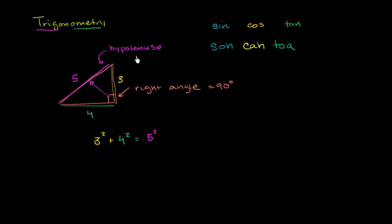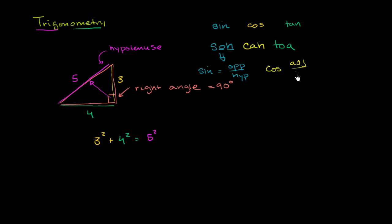You'll be amazed how far this mnemonic will take you in trigonometry. SOH tells us that sine is equal to opposite over hypotenuse. CAH tells us that cosine is equal to adjacent over hypotenuse. And TOA tells us that tangent is equal to opposite over adjacent.